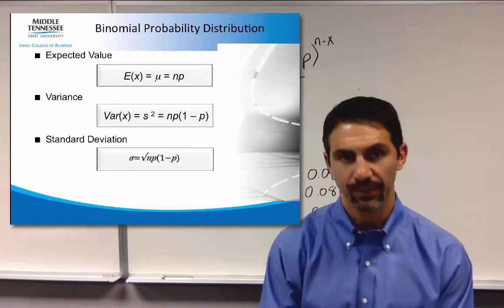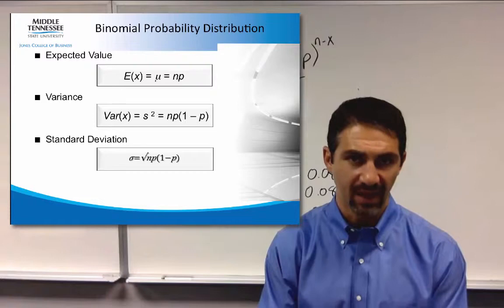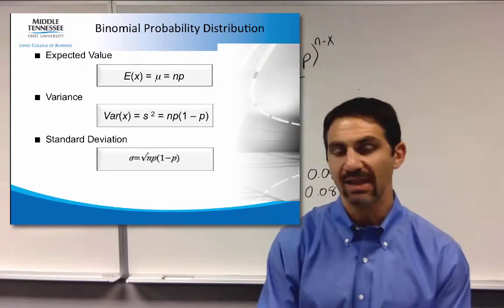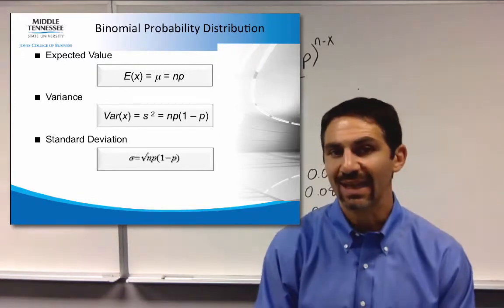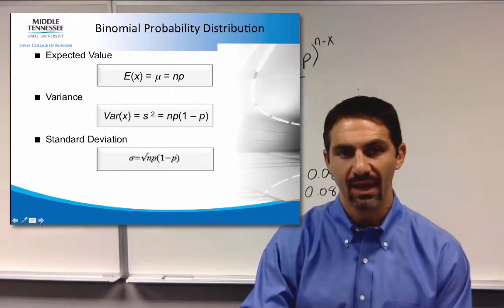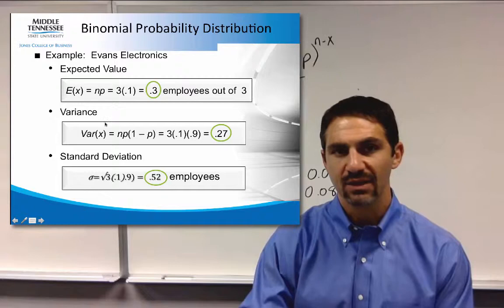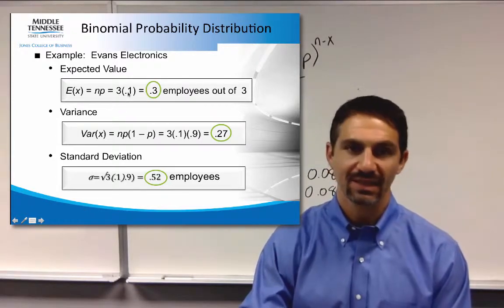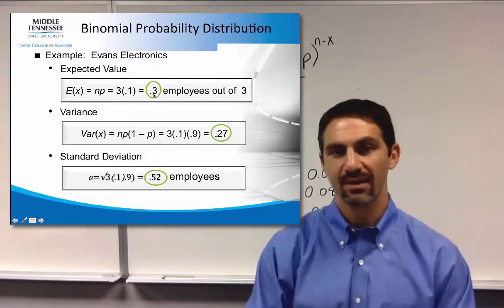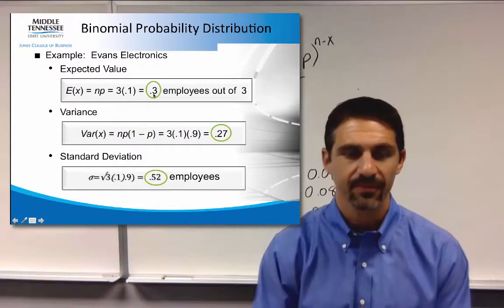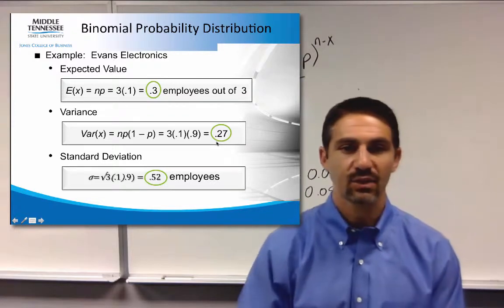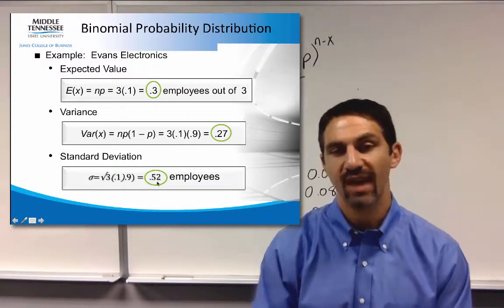Lastly, you can come up with an expected value for your binomial distribution as well as a variance and standard deviation. And as you see, it's actually quite easy to do. You just take your sample size and multiply it by your probability. So in this case, your sample size is 3. Your probability of success being 0.1, out of 3 employees, 0.3% or 0.3 should leave. Your variance is then just 3 times 0.1 times 0.9, which is 0.27. Take the square root of that, and your standard deviation then is 0.52. So that's how you come up with your expected variance and standard deviation for binomial.